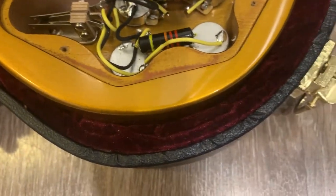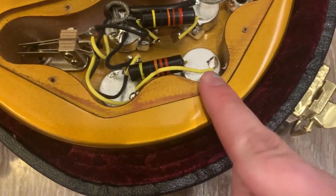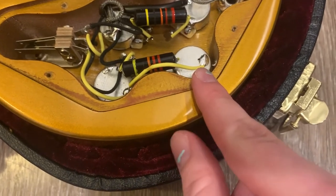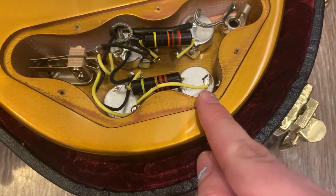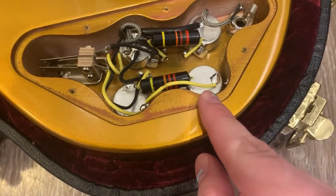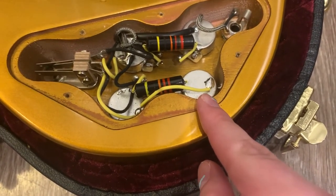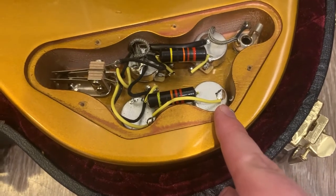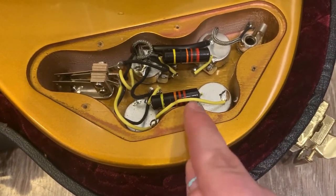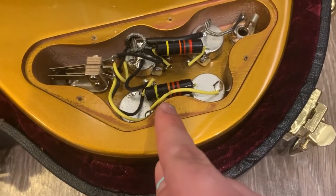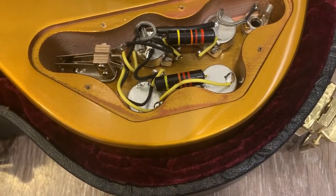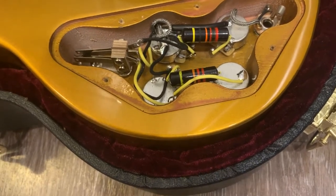So basically what it is, is a resistor, which is this right here. And it's a variable resistor, which means the resistance can be changed from anywhere from zero to 500,000 ohms. The resistor is wired to the capacitor here, which is then wired to ground. And that creates what's called a low-pass filter, which darkens and mellows the sound of the guitar.